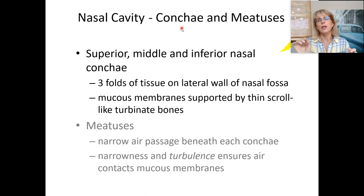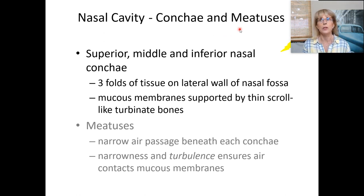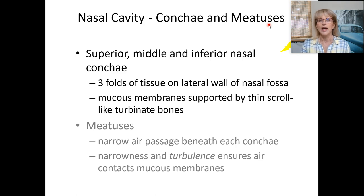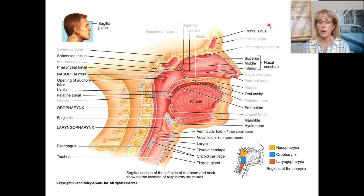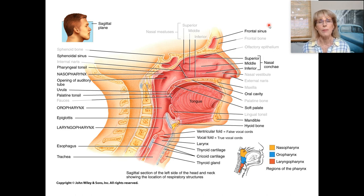In between the conchae are spaces, and air actually travels through those spaces along the surface of the conchae. Those spaces are called the meatuses. On this study slide, everything in dark font is a term that is in your lab activity this week and is fair game for a quiz next week — grayed-out terms are not ones you're responsible for.